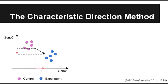Looking at the sign of the component value — whether it's positive or negative — gene one has a positive component, which means gene one is upregulated in the experiment. Gene two has a negative projection, so gene two is downregulated in the experiment. So from a single direction representation, we can use the component value to describe both how much a gene is differentially expressed and whether the gene is up- or down-regulated.